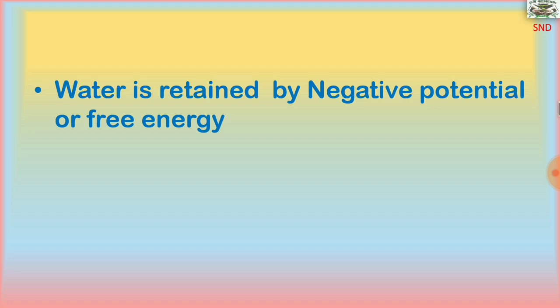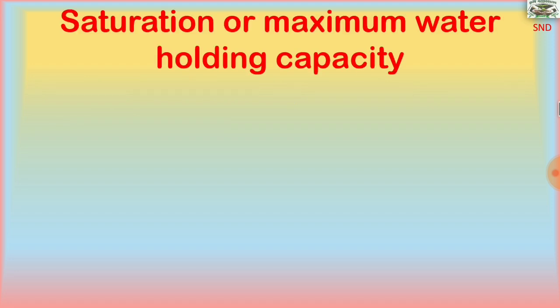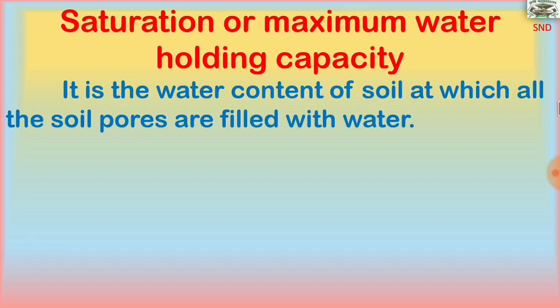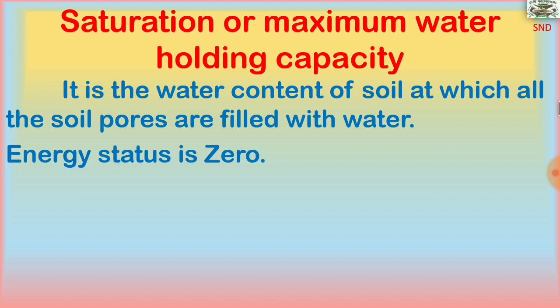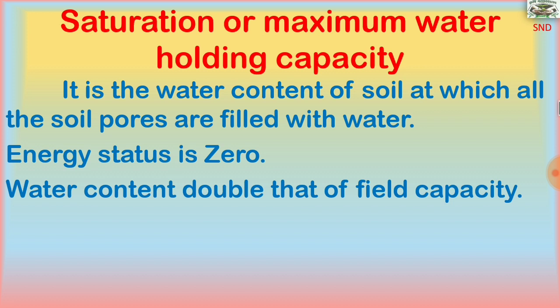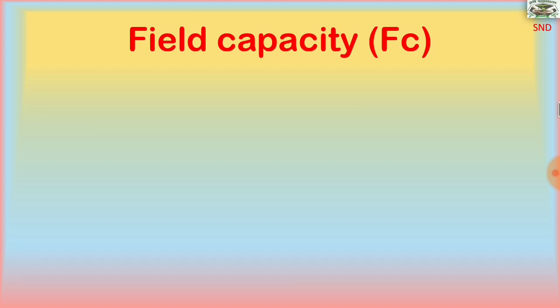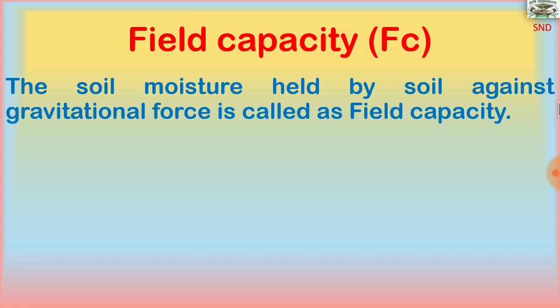Water is retained by negative potential or free energy in the soil. Saturation, or maximum water holding capacity, is the water content of soil at which all the soil pores are filled with water. The energy status is 0, and water content is double that of field capacity.